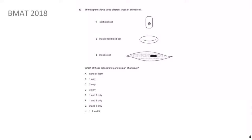We're going to cover BMAT 2018 Question 13. In the BMAT, beginning questions are generally quite easy, mid-range questions are moderate, and the last ones tend to be harder, so Question 13 out of 27 should be manageable. The diagram shows three different types of animal cells: epithelial cells, which line airways as a barrier between the outside world and internal tissue; matured red blood cells, which are bags of haemoglobin carrying oxygen; and muscle cells, which aid bone movement.